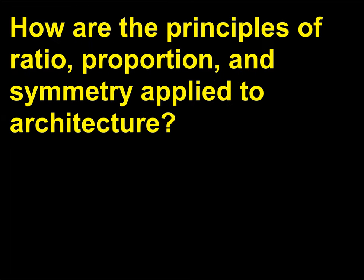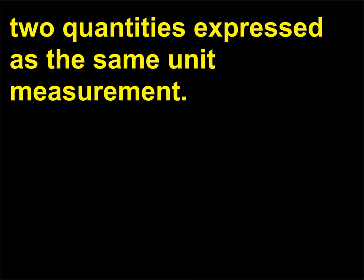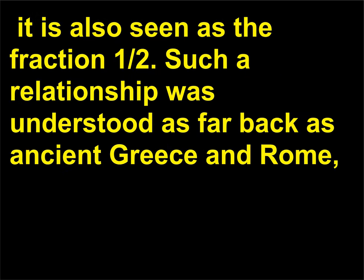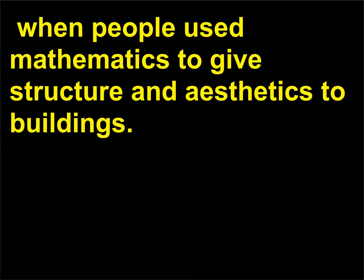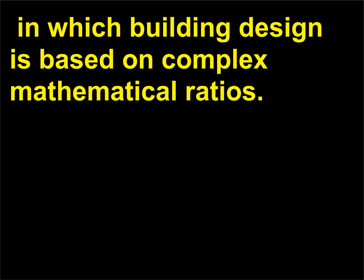How are the principles of ratio, proportion, and symmetry applied to architecture? The definition of a ratio is a comparison by division of two quantities expressed as the same unit measurement. For example, a building that is two hundred feet wide and one hundred feet tall has a ratio of 2:1 between its width and height, also seen as the fraction one-half. Such a relationship was understood as far back as ancient Greece and Rome, when people used mathematics to give structure and aesthetics to buildings. This is especially important in architecture, in which building design is based on complex mathematical ratios.